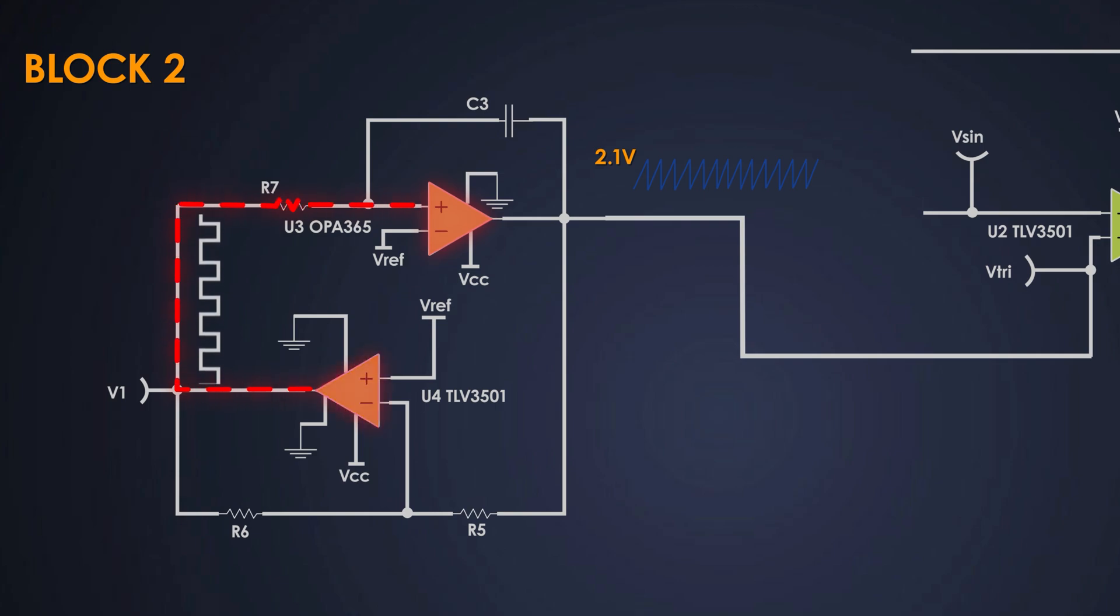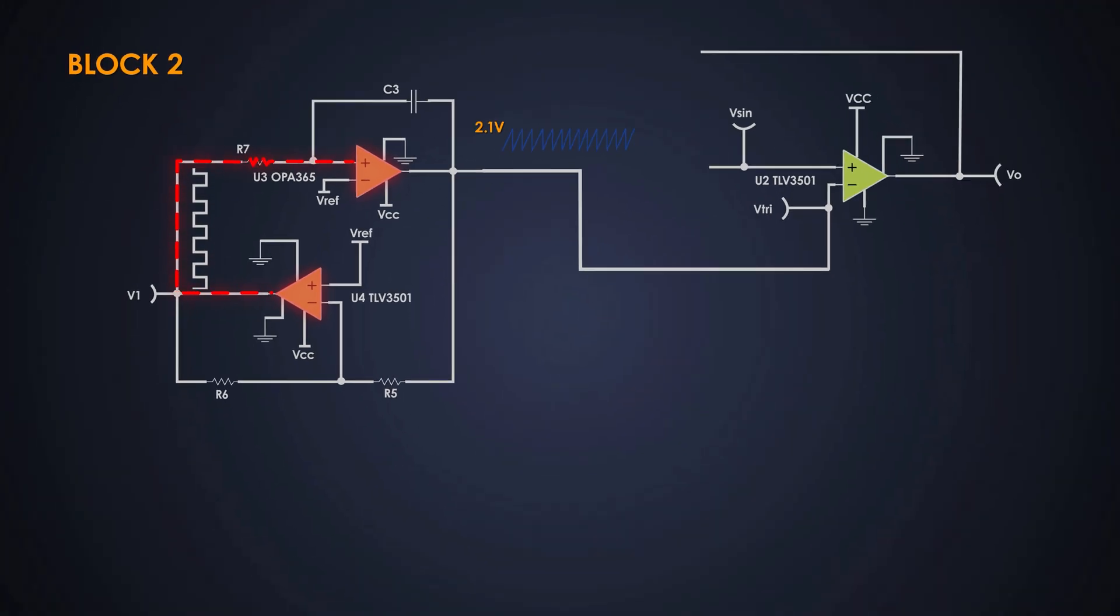We use another op-amp U3 as an integrator and pair it with a comparator U4. The comparator flips its output every time the voltage crosses a certain point, which causes the integrator to reverse direction, creating a symmetrical triangular waveform.